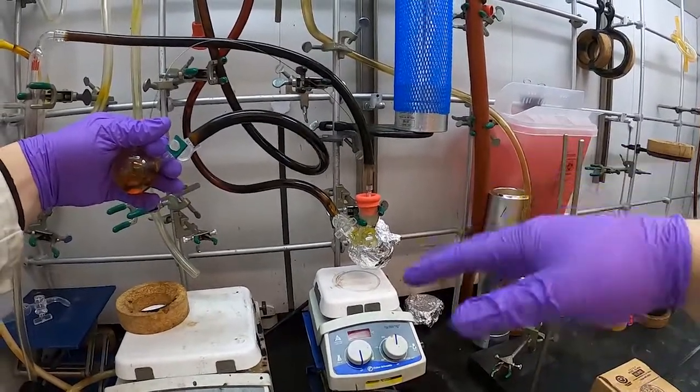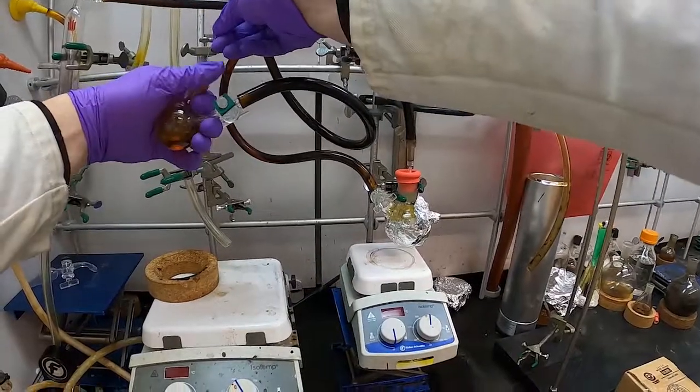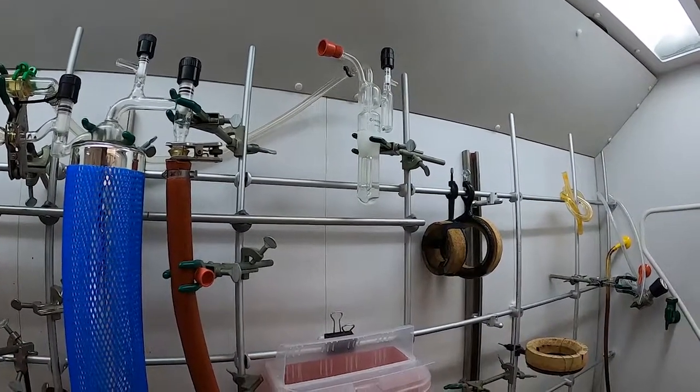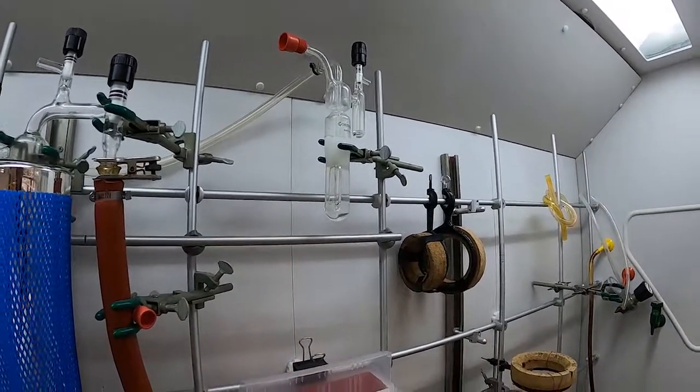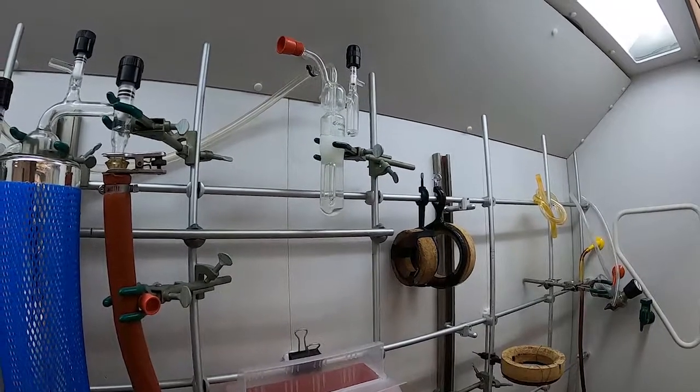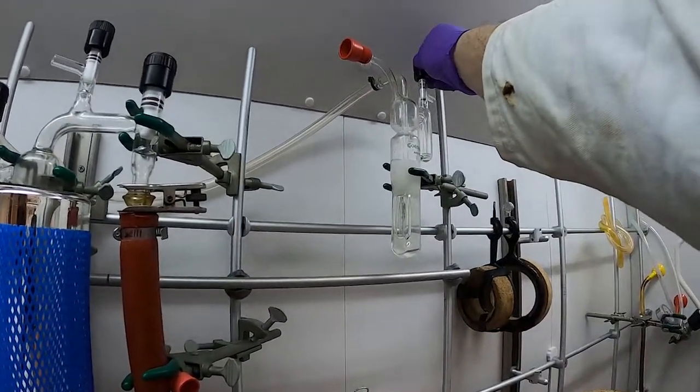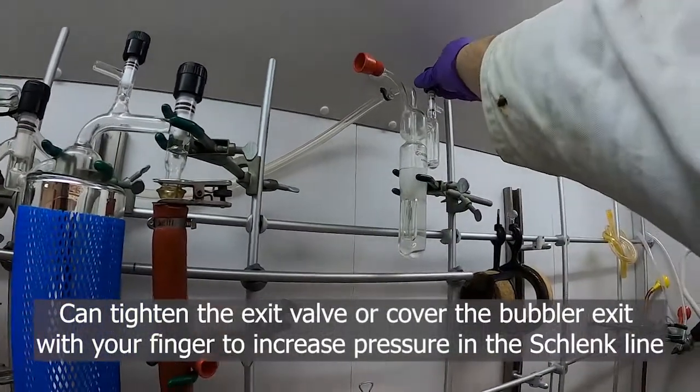We may need to get the nitrogen to push the solution through your cannula. Depending on the type of bubbler you have, if you're not getting the desired flow that you want, if you have one of these screw kind, you can just tighten this valve and prevent some of the nitrogen out of the pressure in your system.